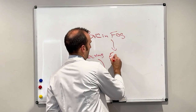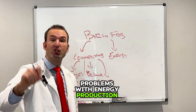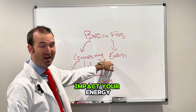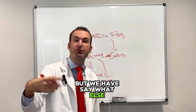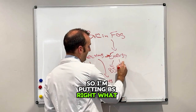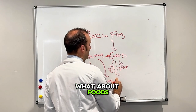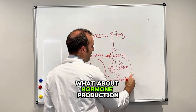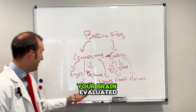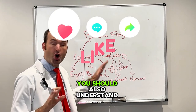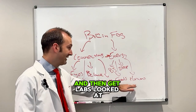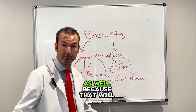Brain fog also involves problems with energy production and utilization. If your brain is not as efficient because it doesn't connect as well, this is ultimately going to impact your energy. We have to say what else impacts your energy — what about blood sugar? It's not enough to just have your brain evaluated with how it's connected; you should also understand the fundamentals of health and get labs looked at to see what's happening there as well, because that will also impact you.